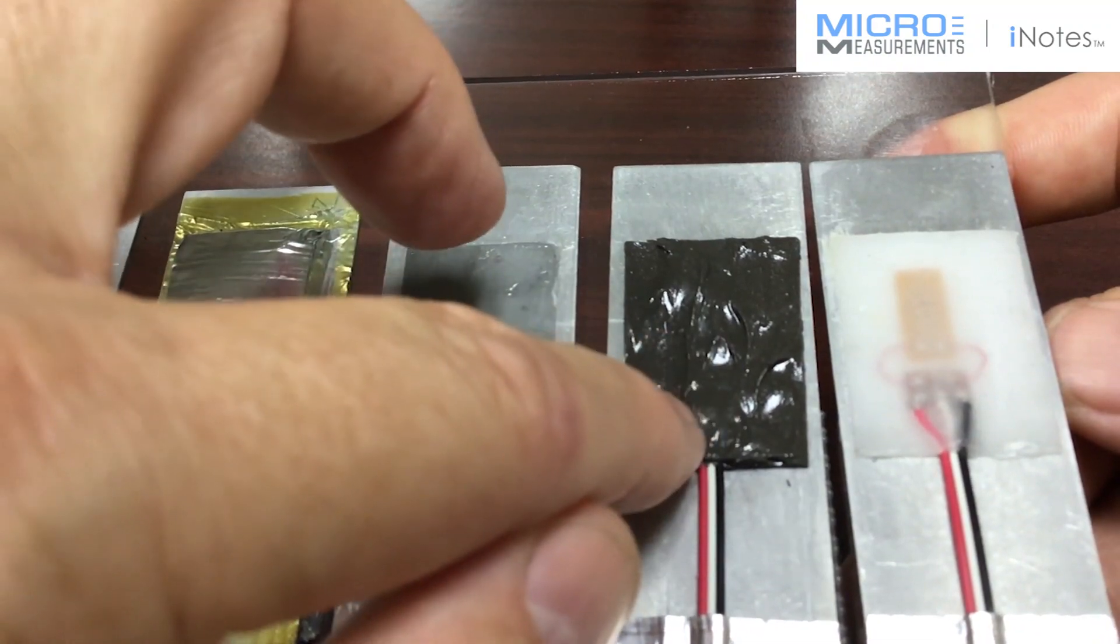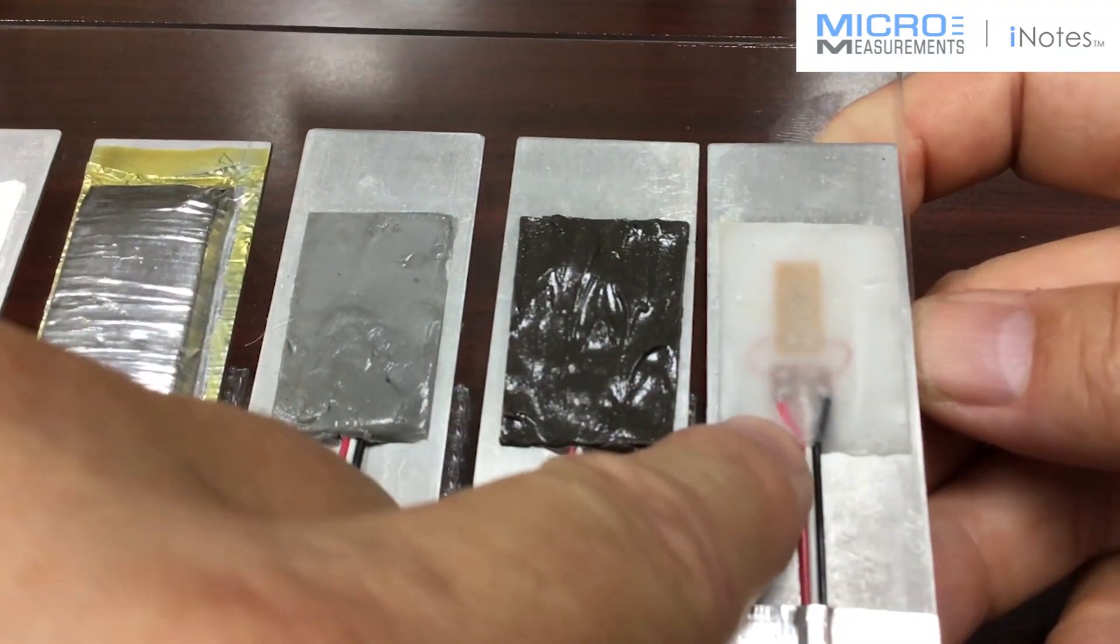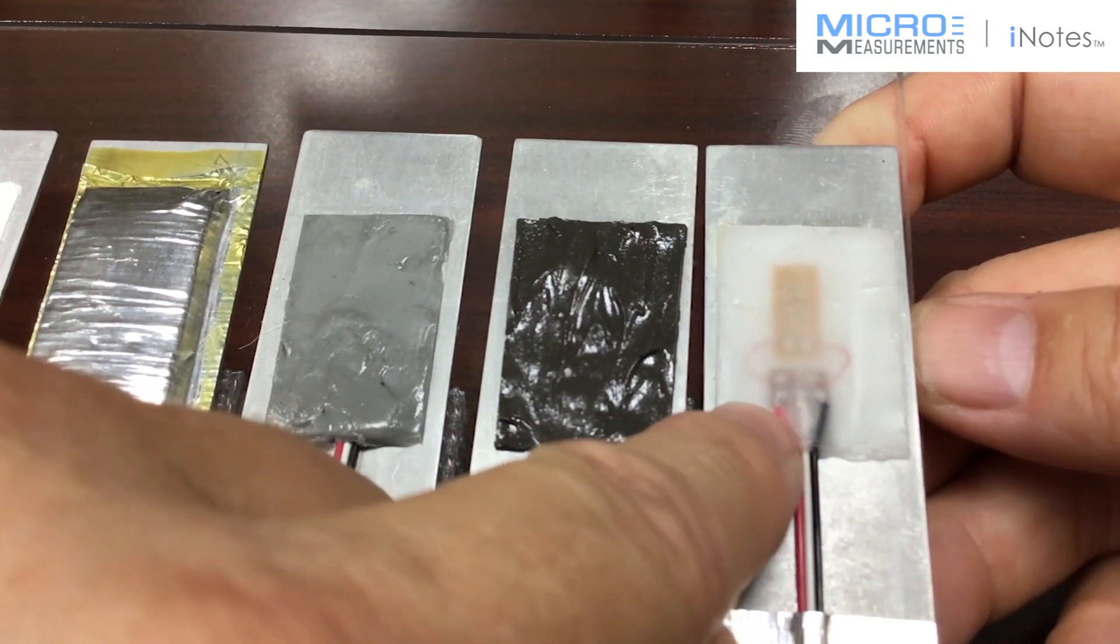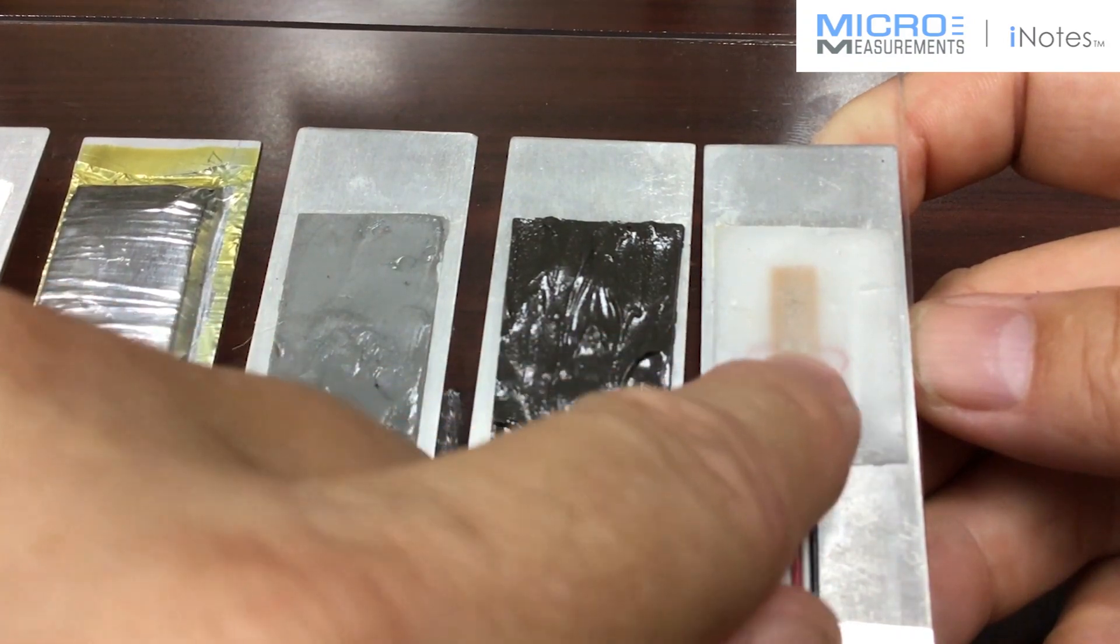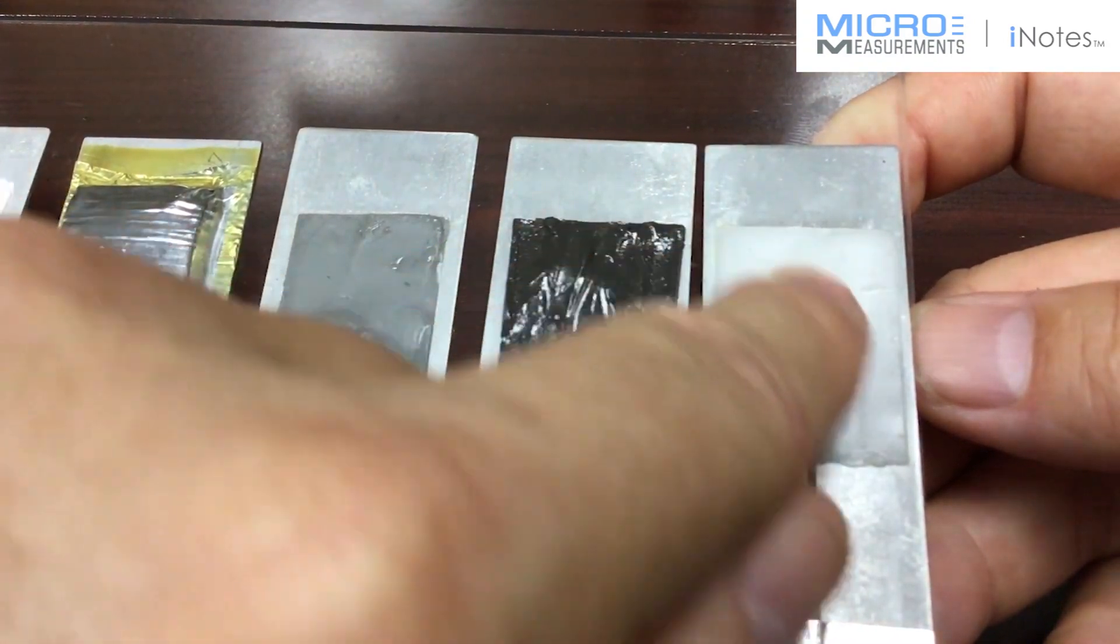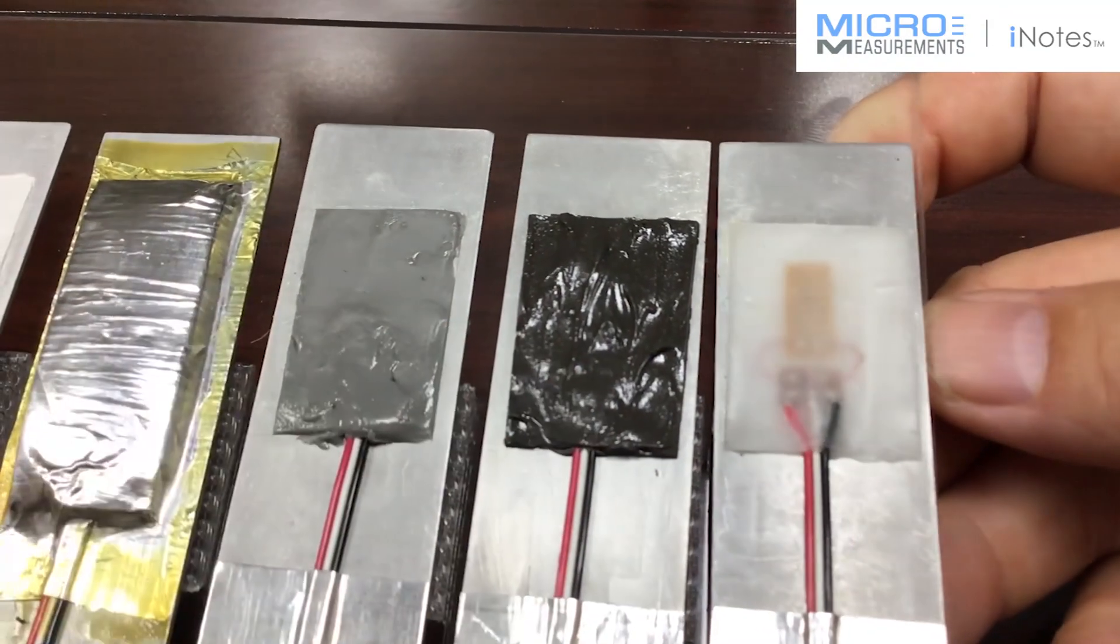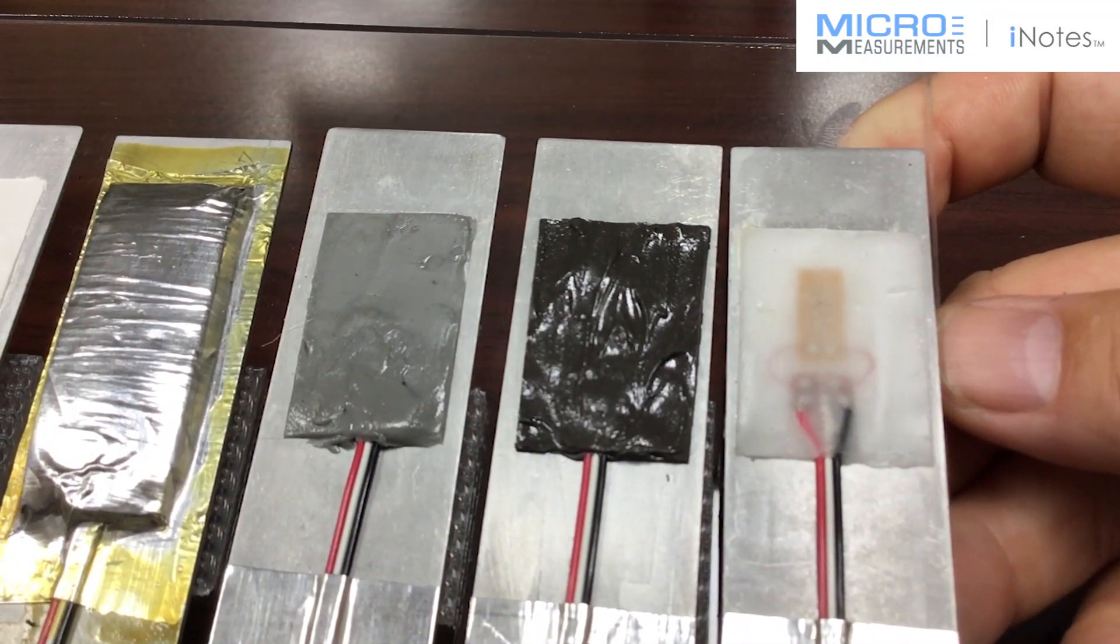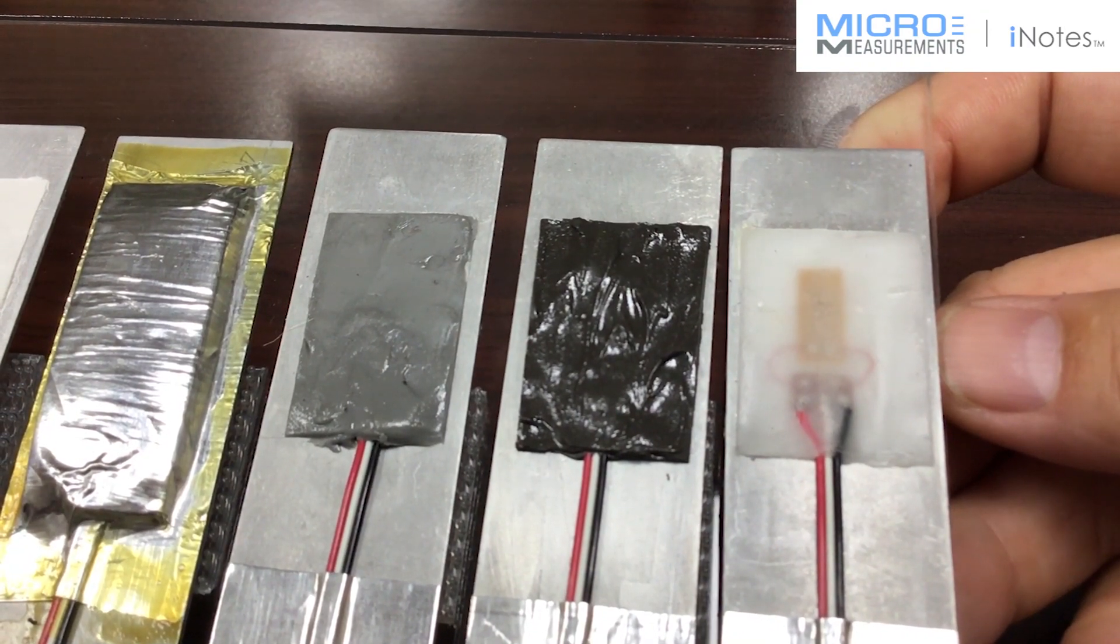And oftentimes it's used in combination with other coatings, and oftentimes it's used in combination with this last one which is our M-Coat W-1 Microcrystalline Wax. Wax is the best moisture barrier we've got, and oftentimes you'll put a coating of wax over top of the strain gauge and then you'll follow it with some M-Coat-JA, and that makes a really tough combination of a moisture barrier and mechanical barrier.